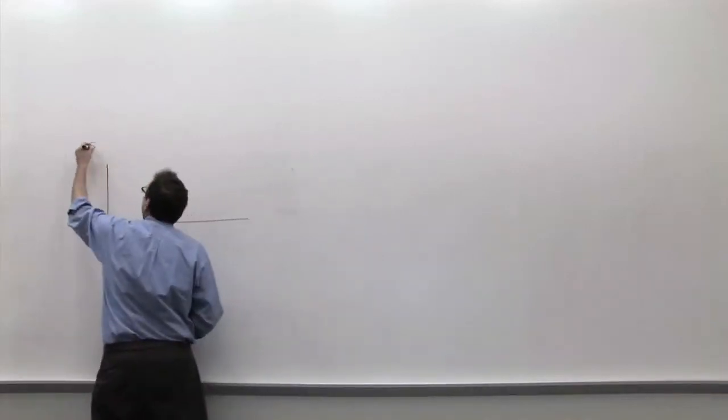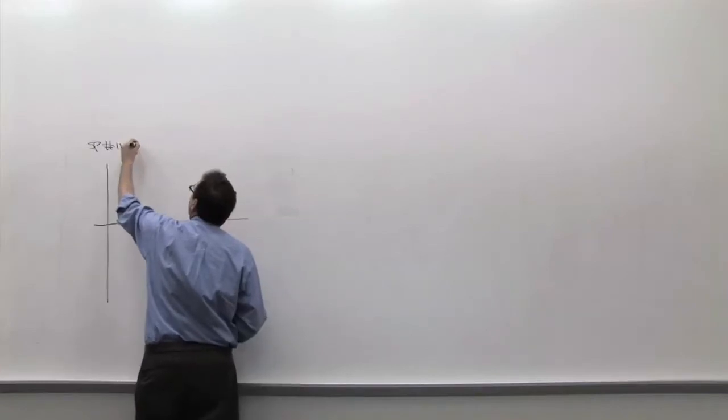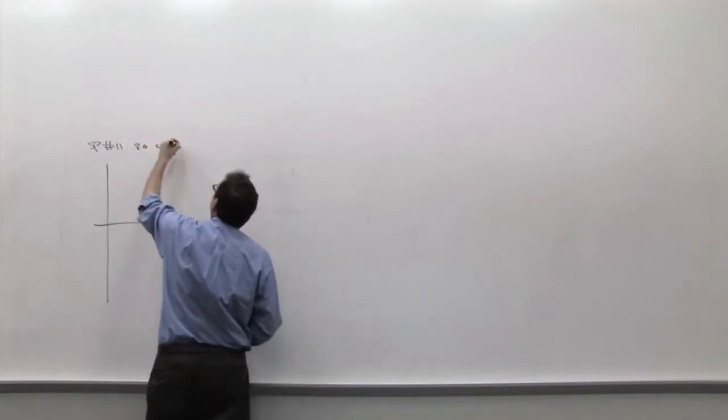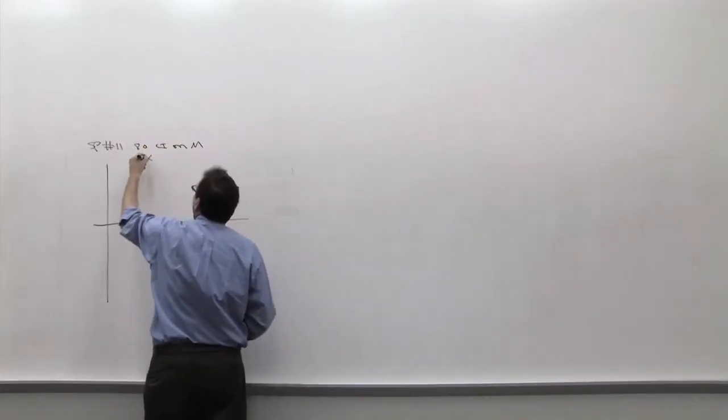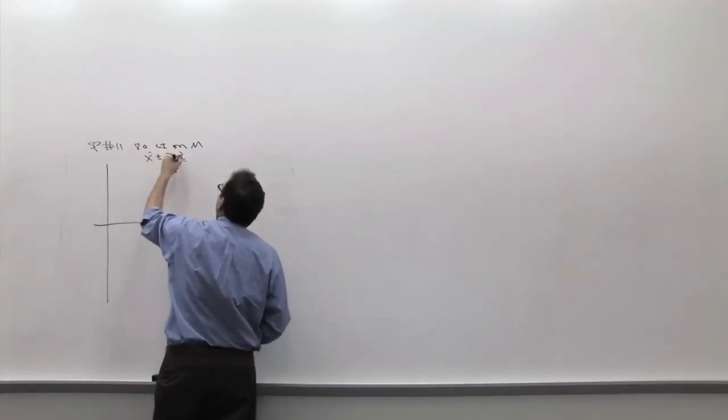Spinner assignment number 11: 80% confidence interval on mu by using the formulas I mentioned, x bar plus minus z times sigma over square root n.